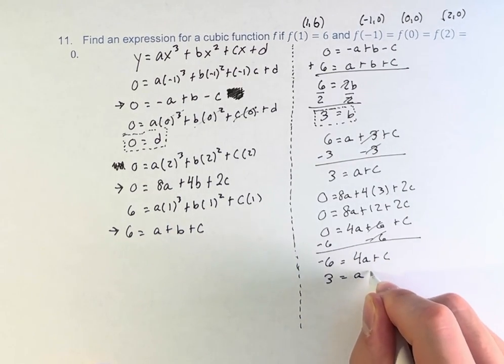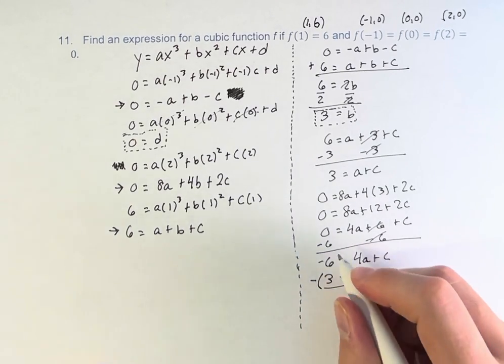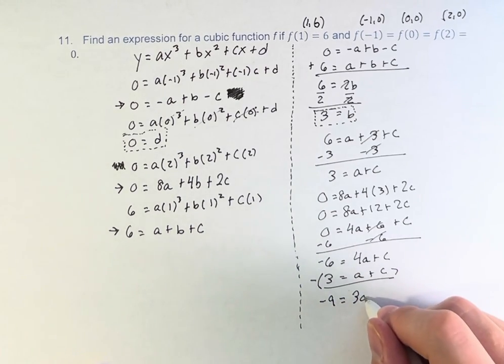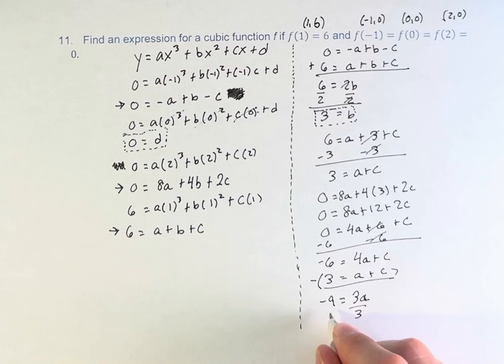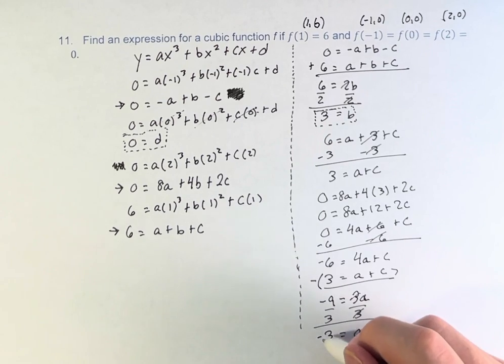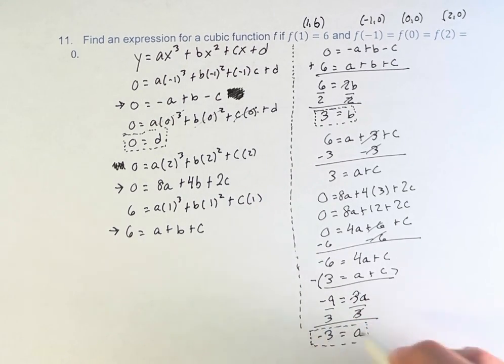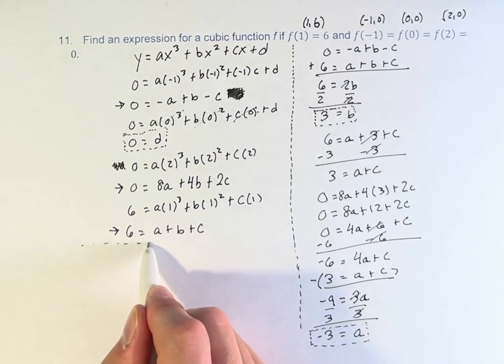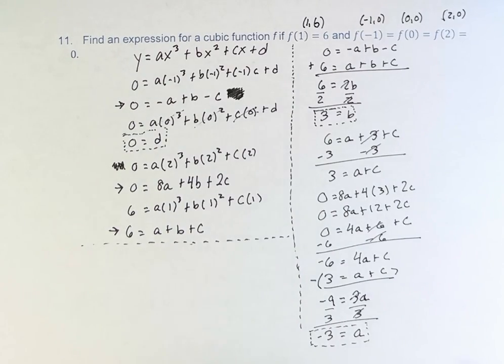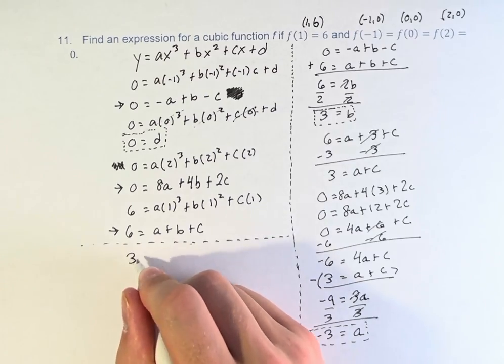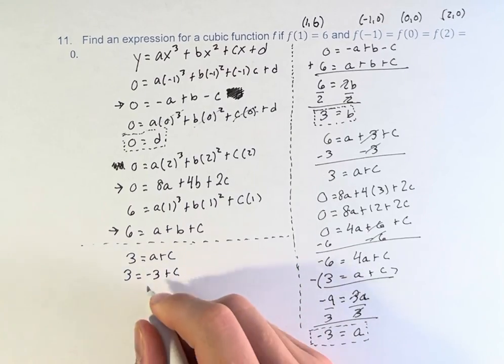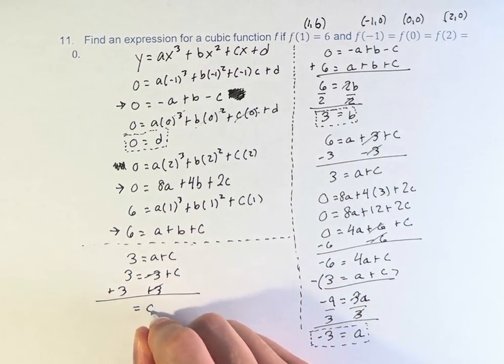Since we know that 3 is equal to a plus c, we can subtract these two equations. And get negative 6 minus 3 is negative 9. 4a minus a is 3a. And c minus c is 0. Therefore, we can divide by 3. And get a is equal to negative 9 divided by 3 is negative 3. So now we have 3 of our 4. Plugging into our last equation, 3 is equal to a plus c. a is equal to negative 3. So 3 is equal to negative 3 plus c. Adding 3 on both sides, c is equal to 6.